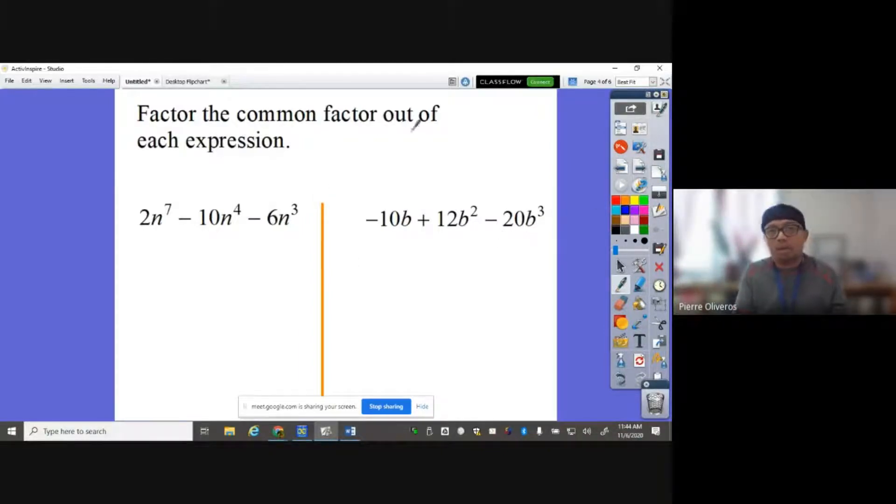So factor the common factor out of each expression. 2n to the 7 minus 10n to the 4th minus 6n cubed. Let's go again with the coefficient first. 2, negative 10, negative 6. What's the greatest common factor of 2, 10, and 6? That will be just 2. Do all of them, all of the terms have n? Yes. So write n there. Which is the smallest n there? The smallest exponent of the variable n is 3. On the last term, it says 2n to the 3rd. So 2n to the 3rd power is your GCF. So draw parentheses here.